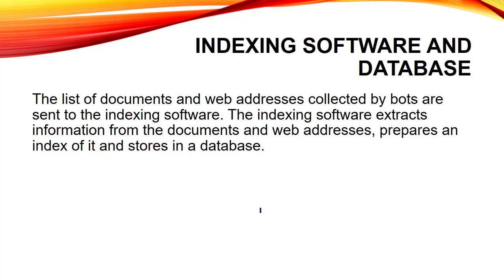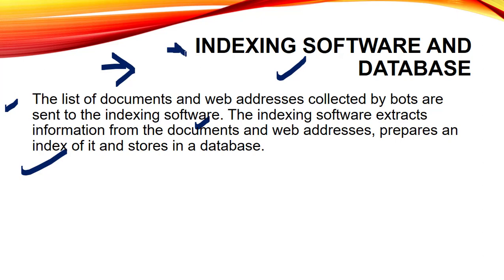Next we have indexing software and database. After the web crawlers have found keywords in our web pages, it is very important for the search engine to store that log list or keyword list into a database — for that, indexing software is used. The list of documents or web addresses collected by the bots are sent to the indexing software. The indexing software extracts information from the documents and web addresses, prepares an index of it, and stores it in a database. For example, if you want to search about MS Dhoni, you write that term in the search engine. This indexing software will fetch that search term and look for it in the database. It helps the user to identify or locate something from the search engine's database.